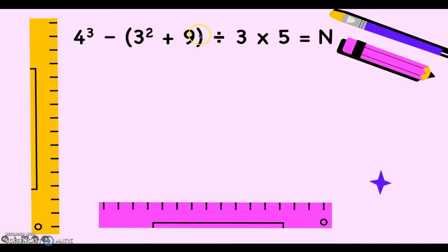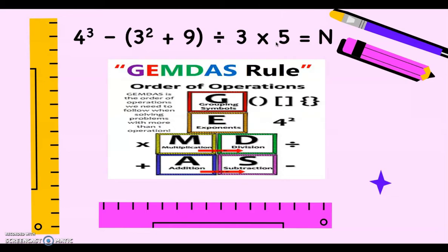Plus 9 plus parenthesis divided by 3 times 5 is equal to n. There are a lot of operations in one equation and our rule here is GEMDAS. When you say GEMDAS, we have here the order of operations starting from the grouping symbols — so in one equation we start with grouping symbols: parenthesis, brackets, and braces.